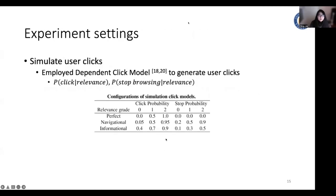Next, I will introduce our empirical analysis. We first simulate user clicks for the online learning track. We import a dependent click model to generate user clicks. We use a different set of click probability and stop probability to simulate different kinds of user behaviors.